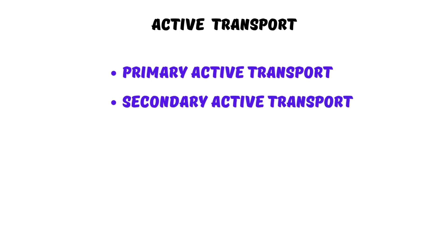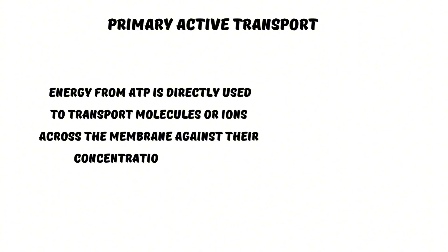There are two types of active transport: primary active transport and secondary active transport. In primary active transport, energy from ATP is directly used to transport molecules or ions across the membrane against their concentration gradient.